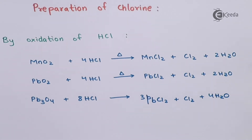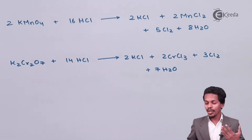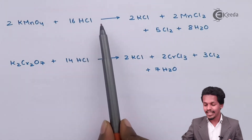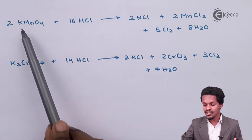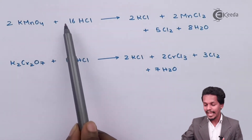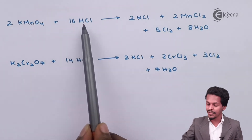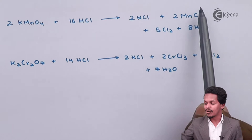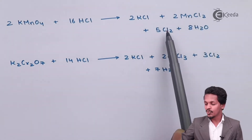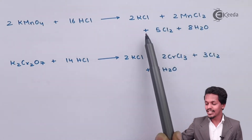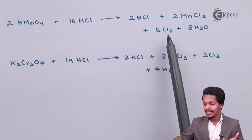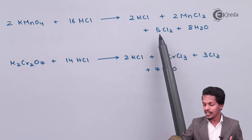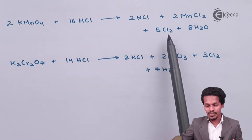We also have different reactions from which we can obtain Cl2. In this case we are using 2 moles of KMnO4 as the oxidizing agent. Whenever it is treated with 16 moles of HCl, the products we get are 2 moles of KCl, MnCl2, Cl2, and 8 moles of H2O. We can obtain a large amount — that is 5 moles of Cl2 — in this case.